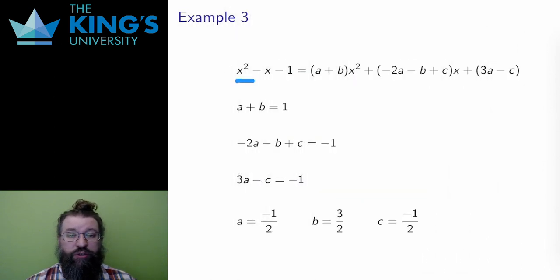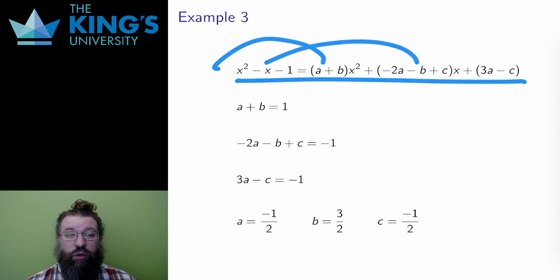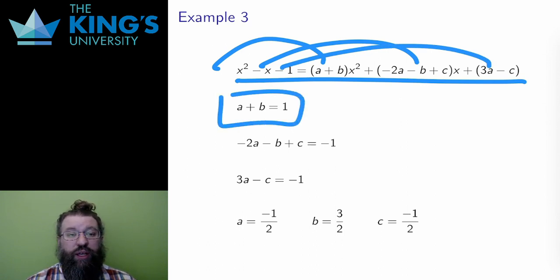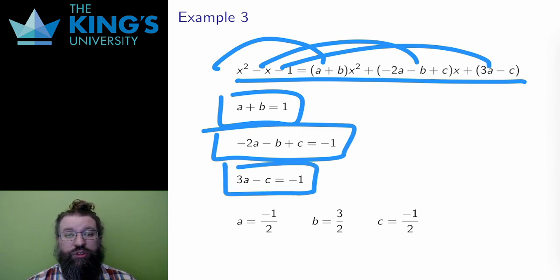This is the equation of the numerators. As an equation of polynomials, I equal each of the coefficients. For the x squared coefficient, I get a plus b equals 1. For x, I get negative 2a plus b plus c equals negative 1. And for the constant, I get 4a minus c equals negative 1.